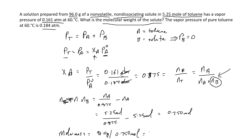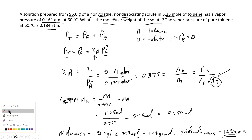That calculation gives 128 grams per mole as the molar mass. But remember, the question asks for the molecular mass, so the molecular mass is 128 amu. If you recall from Chem 1, the molar mass and molecular mass are numerically the same but differ in their units. So that's another example utilizing vapor pressure and Raoult's law.